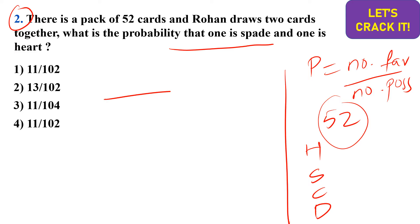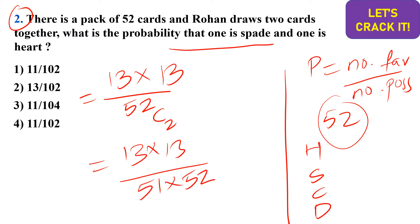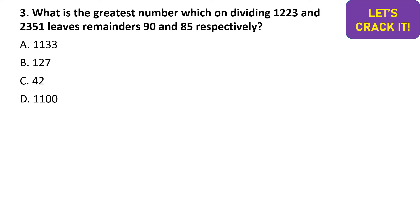The denominator is the total number of ways to choose 2 cards from 52, which is 52C2. The numerator: favorables are one spade and one heart, so it is 13 × 13. Simplifying, 13 × 13 divided by 52C2, where 52C2 = (51 × 52)/2. Option B is the correct answer.